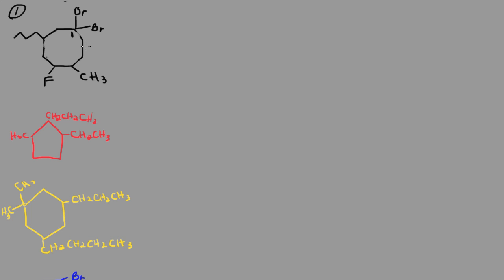If I number the carbons going clockwise, I'm going to end up with substituents on carbon number one, carbon number four, five, and carbon number seven. Now, if I number the opposite direction, I'm going to end up with substituents on carbon one, three, five, and six. So this will be the best way to number the carbons.